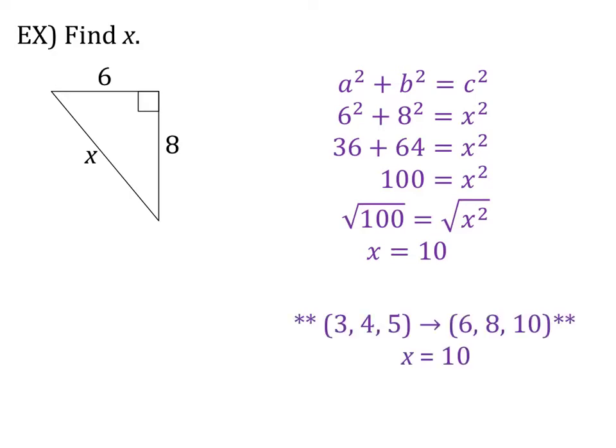Some of you may have noticed at the beginning that this is a multiple of a Pythagorean triple. So this is a 3-4-5 triangle multiplied by 2. So that would be a 6-8-10. So if you remember that, you could write this down, the 3-4-5 arrow 6-8-10. That would be how you'd show your work, and therefore X is equal to 10.